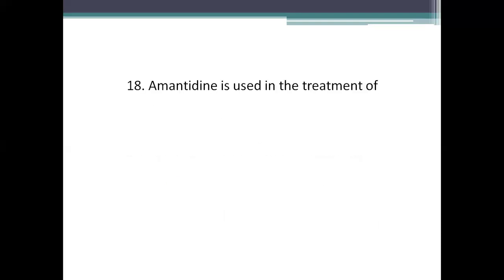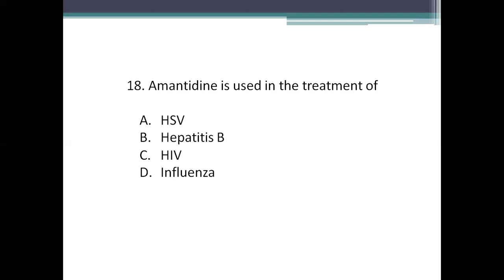Next question: amantadine is used in the treatment of which of the following? Option A: HSV (herpes simplex virus). Option B: hepatitis B. Option C: HIV (human immunodeficiency virus). Option D: influenza virus. The right answer is Option D, influenza. Amantadine is used in the treatment of influenza — it is a matrix protein inhibitor.